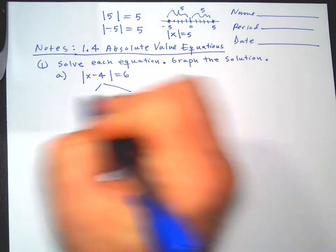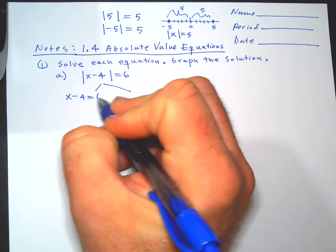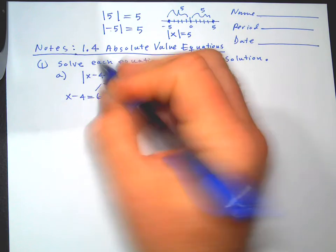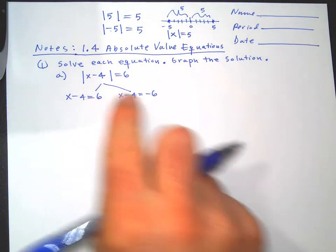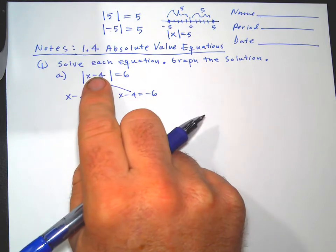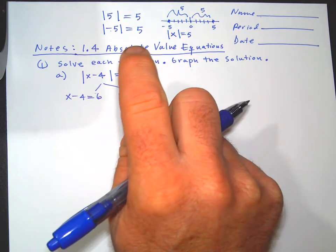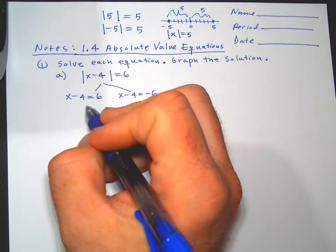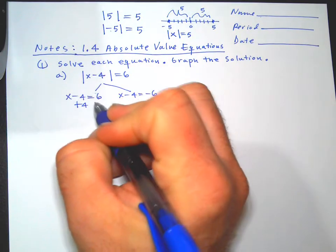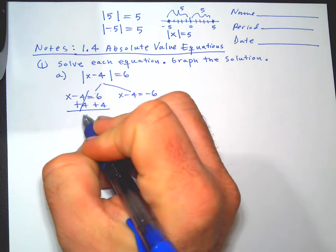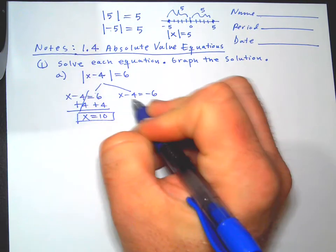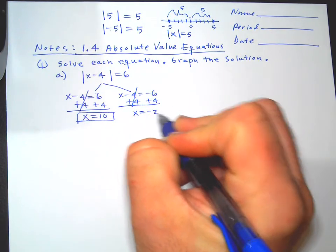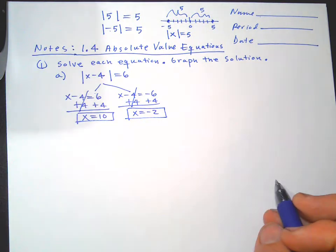There are two situations. One: the inside could equal positive 6. But the inside could also equal negative 6 and still come out positive when you take the absolute value. So we write the two situations: drop the absolute values and set equal to the right side, then drop the absolute values and set equal to the negative of the right side. Now solving for x: add 4 to get x equals 10. On the other side, add 4 to get x equals negative 2. We get two answers on absolute value equations.